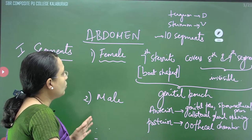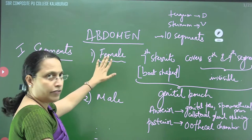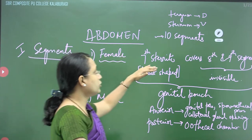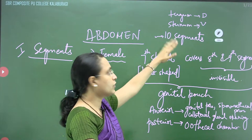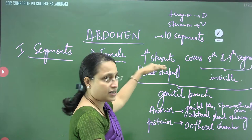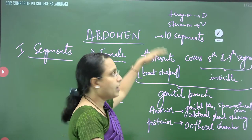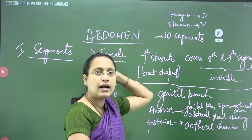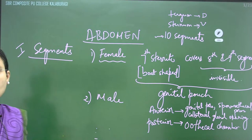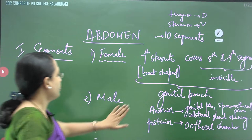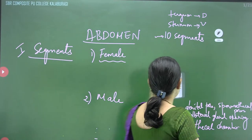This was about the segments in the female. We are not talking about the dorsal exoskeleton plates; we are talking about the plates present on the ventral side, which are called sterna. The ones above are called terga. So this is about the female segments.